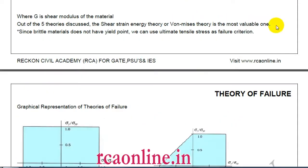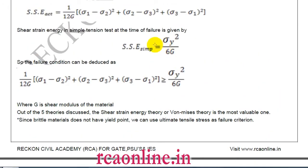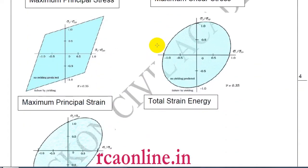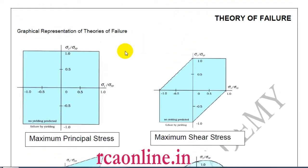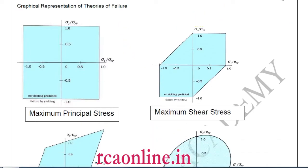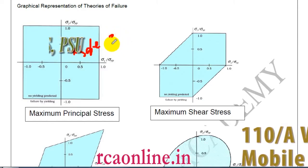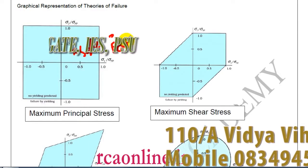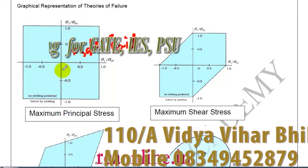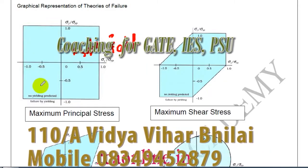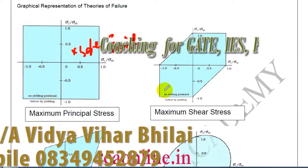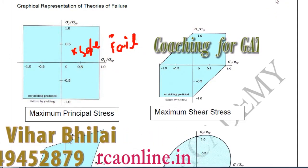These are the five theories on which, on average, one question is asked every year in the Engineering Services exam. Graphically, all five theories can be plotted. If a point lies inside the colored area of the graph, the material is safe; if it lies outside, the material fails.